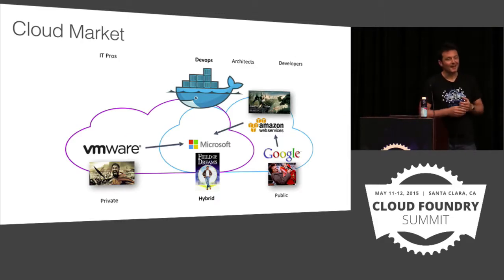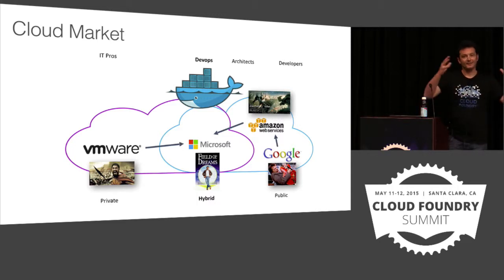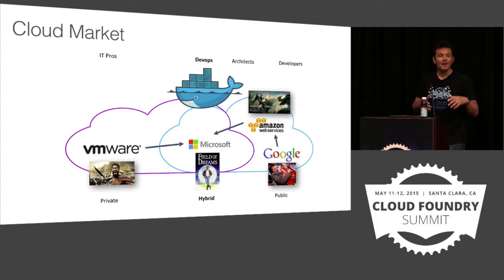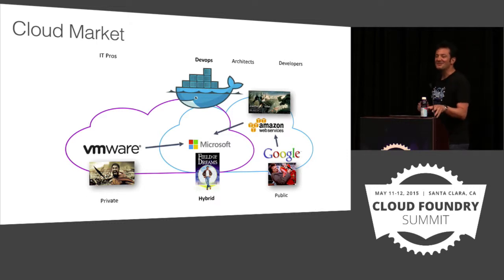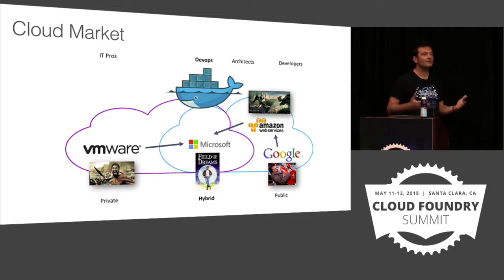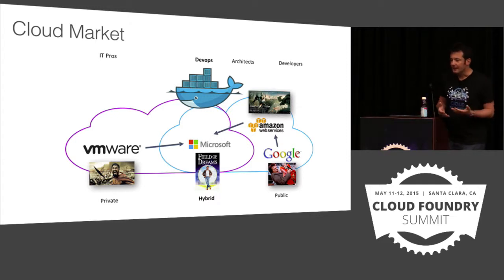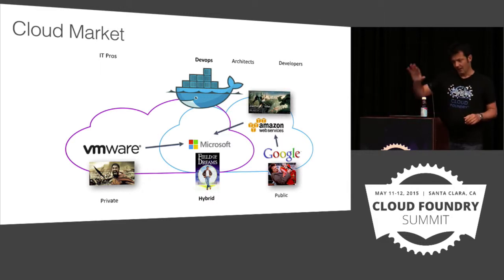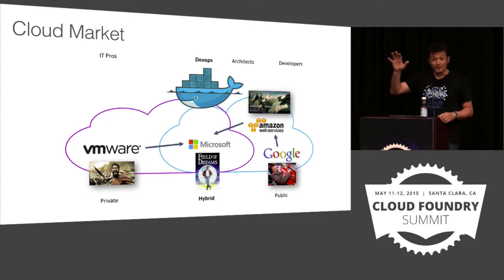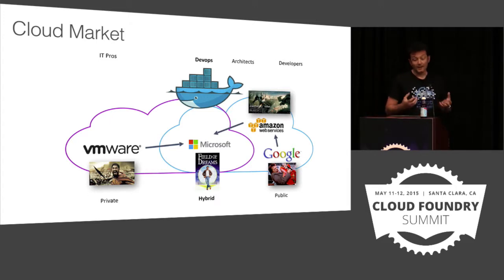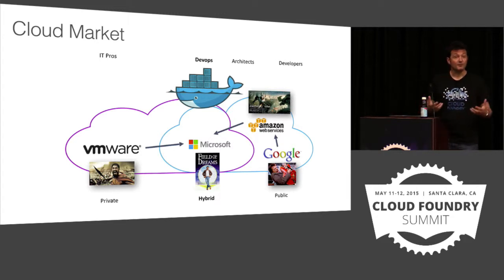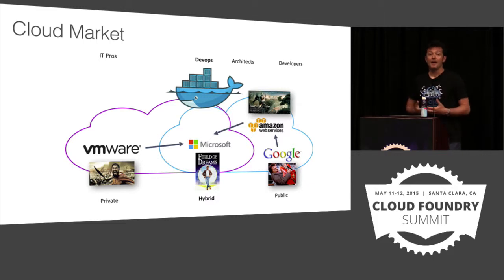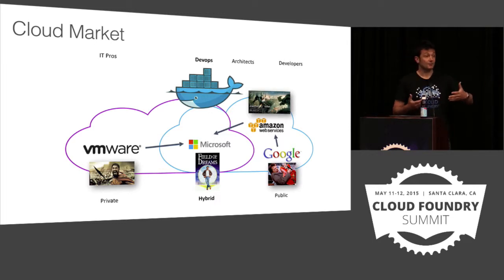Before we start with this talk, I want to talk a little bit about the past infrastructure as a service and the cloud market more broadly. This is the slide I used to show to my team at Microsoft to present how I saw the cloud market, using movies as analogies. On one side, you have private cloud, which is owned by VMware. On the right side, you have the big public cloud providers — Amazon and Google. And at the center, you have Microsoft, who's really playing a hybrid strategy. That's really the strong point of Azure, and also the strong point of Cloud Foundry.